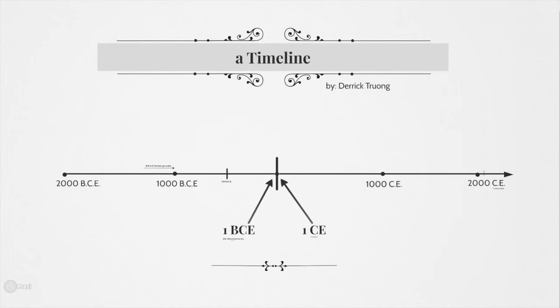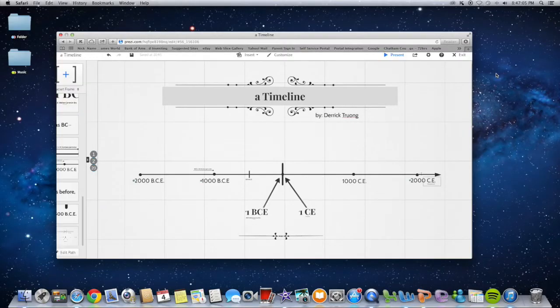And there is no year zero. There is a 1 BCE and a 1 CE, but there is no year zero.